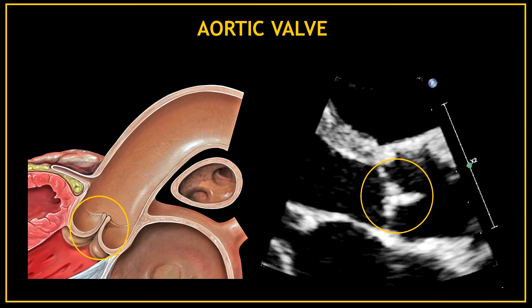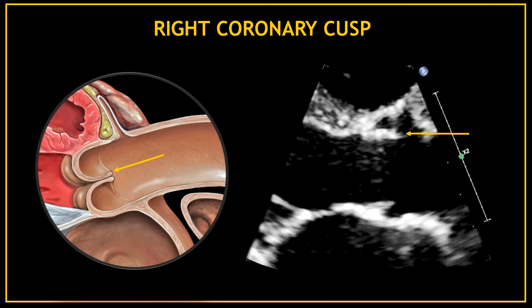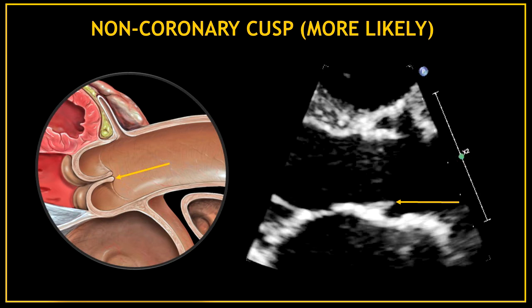Now let's get a closer view. The first valve at the top is the aortic valve — you can see how the valve is closed. When the aortic valve is open we can differentiate the cusps. The first thin line at the top is the right coronary cusp. Depending on the cut, this second line is more likely to be the non-coronary cusp. However, depending on the cut you may also be able to see the left coronary cusp in this view.